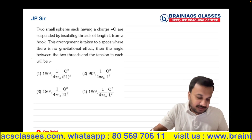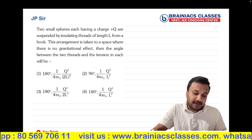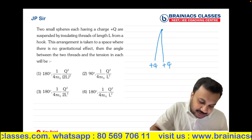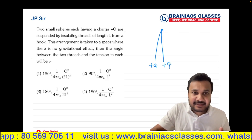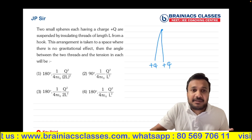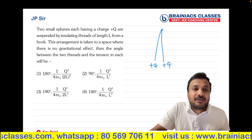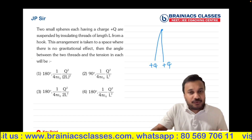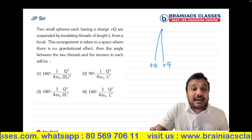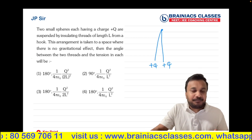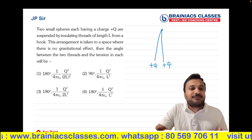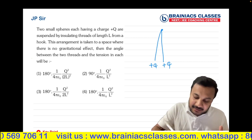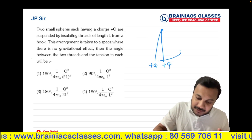Question number 3, the last question in this capsule: two small spheres each having charge +Q are suspended by an insulating thread of length L from a hook. This arrangement is taken into space where there is no gravitational effect. There is no gravitational force, but electrostatic force remains everywhere in the universe. So the two +Q charges will repel each other.